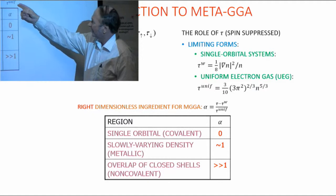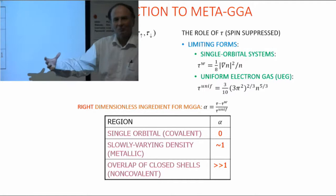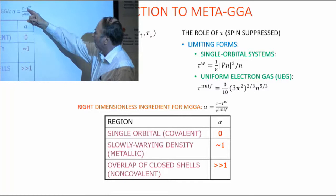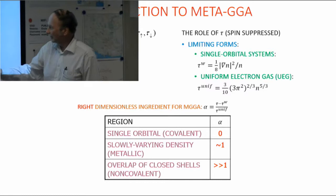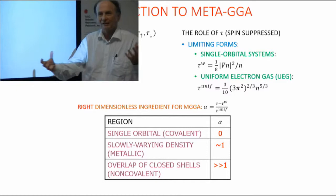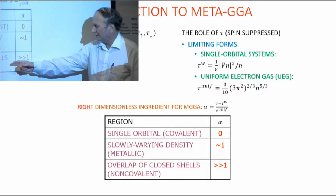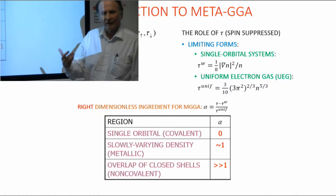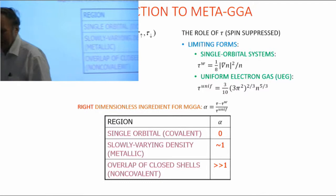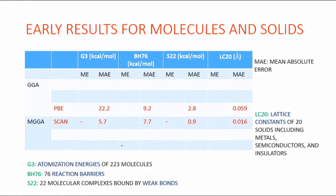We can construct the dimensionless ingredient alpha as (tau − tau_W) / tau_uniform. It's basically an ingredient of what Becke called the electron localization function. We realized it's a good object for constructing meta-GGAs because it can recognize three different kinds of bonds. If we have a single-orbital shape or a covalent bond with essentially one orbital, alpha is zero. If we have a slowly varying density like in a simple metal, alpha is roughly one. If we have an overlap of closed shells, like two argon atoms coming close together, alpha is much bigger than one — that's why you can have non-covalent bonds like hydrogen bonds or intermediate-range van der Waals interactions.